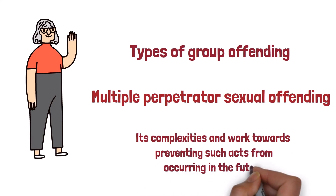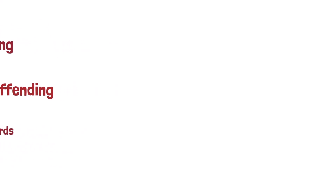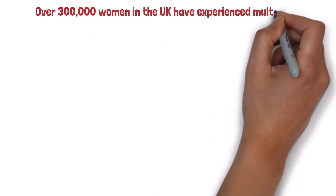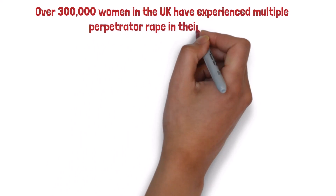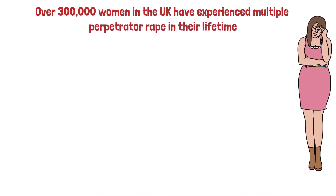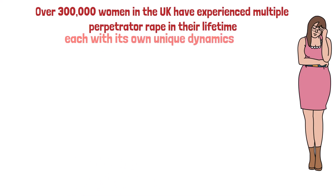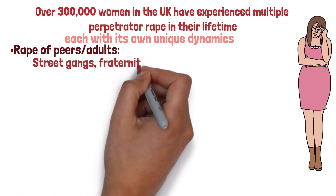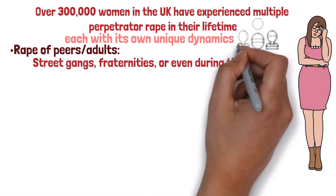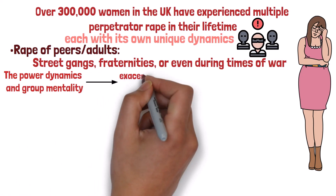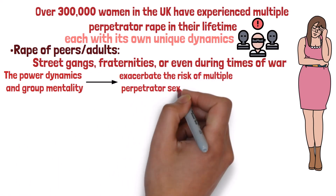Before we delve deeper, let's grasp the magnitude of the problem. Shockingly, over 300,000 women in the UK have experienced multiple perpetrator rape in their lifetime. These incidents can occur in various contexts, each with its own unique dynamics. For the rape of peers or adults, we often see this in scenarios involving street gangs, fraternities, or even during times of war. The power dynamics and group mentality in these situations can exacerbate the risk of multiple perpetrator sexual offending.